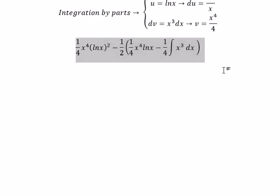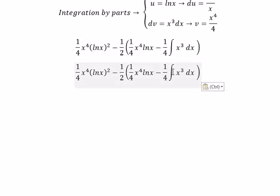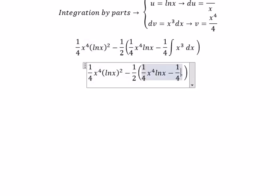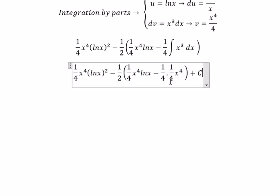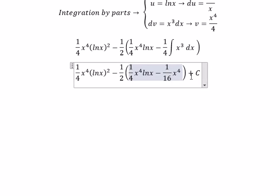And now, we got 1 over 4 x to the power of 4. And C is the constant. This one, we got 1 over 16. And this is the final answer.